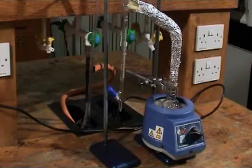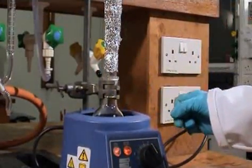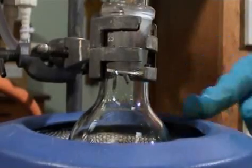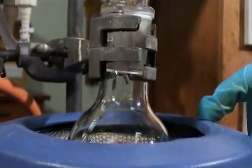We're going to do a reaction using a Dean Stark apparatus. We've got our reaction mixture here with some anti-bumping granules. Make sure you use the right size heating mantle so it fits snugly around the flask.